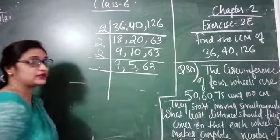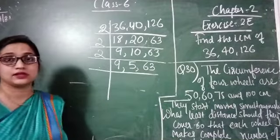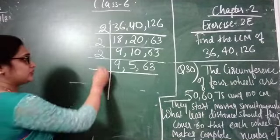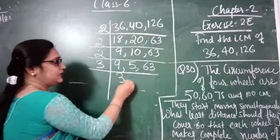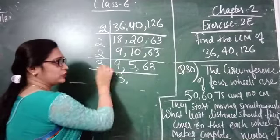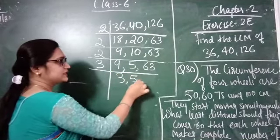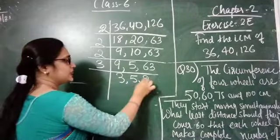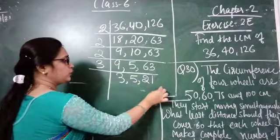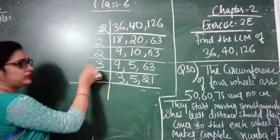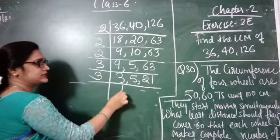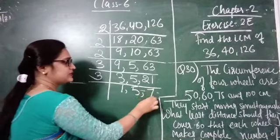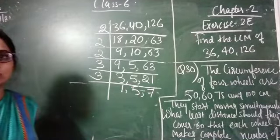Now the next prime number after 2 is 3. Dividing by 3: 9 divided by 3 is 3, 5 cannot be divided by 3 so 5 remains as it is, and 63 divided by 3 is 21. Again by 3: 3 divided by 3 is 1, 5 as it is, and 21 divided by 3 is 7.